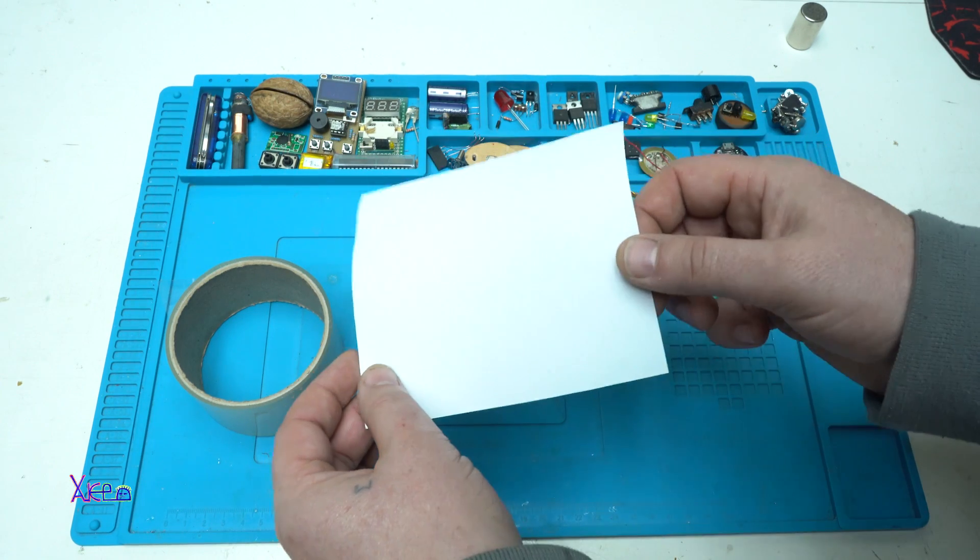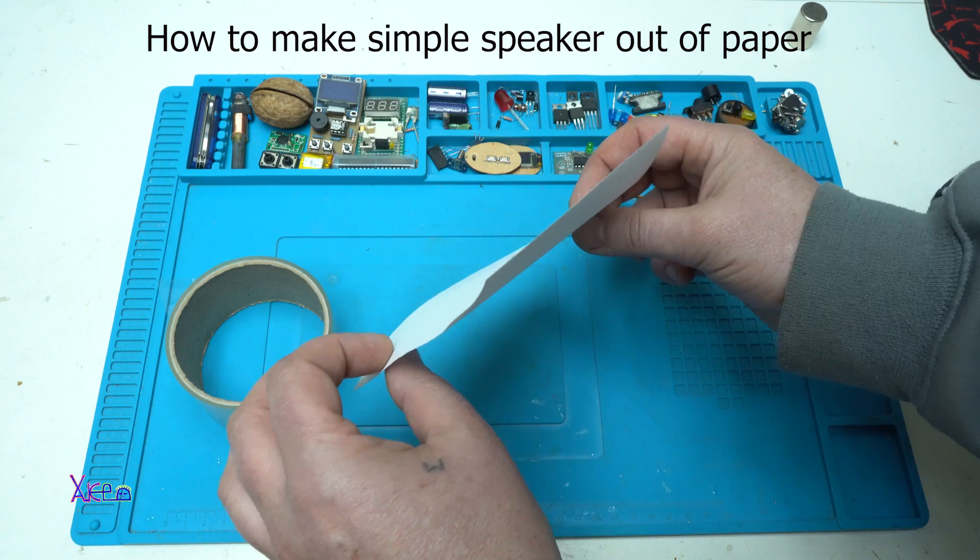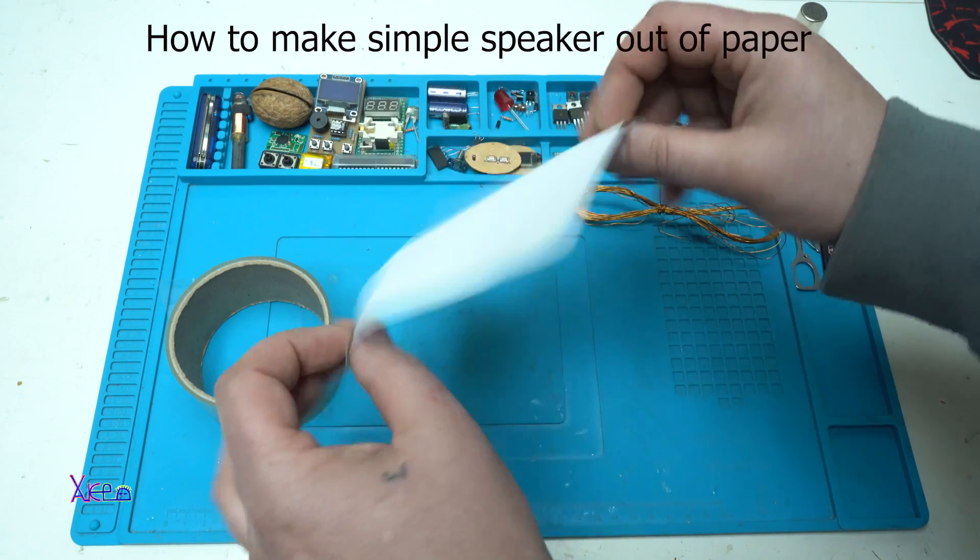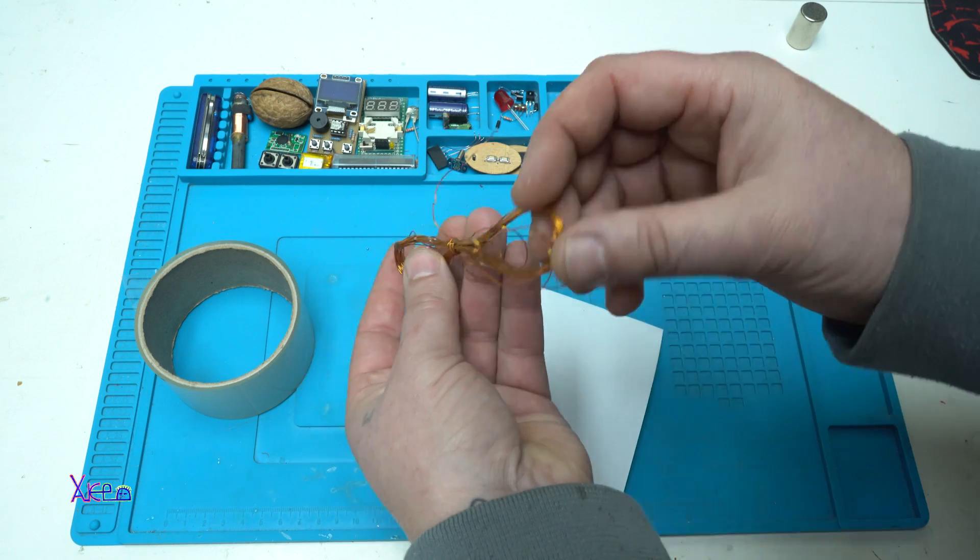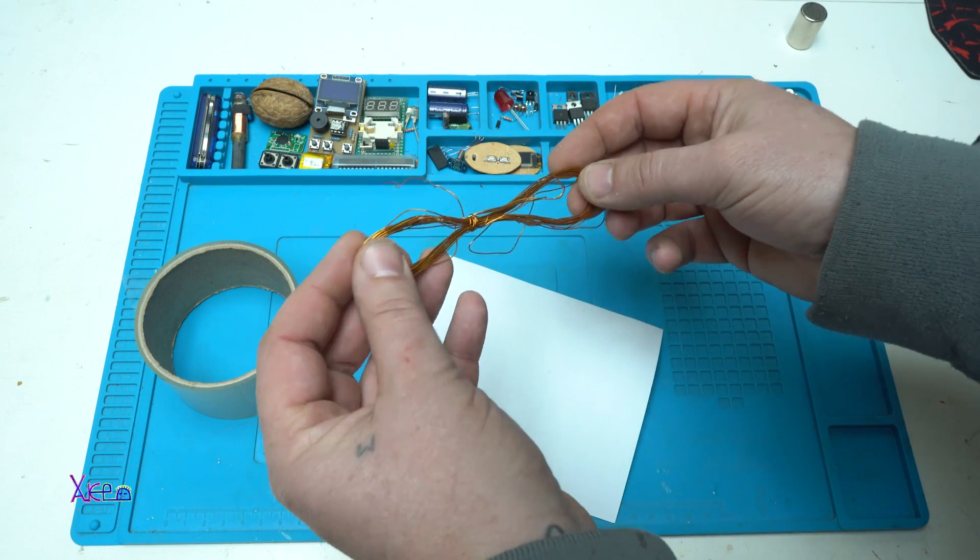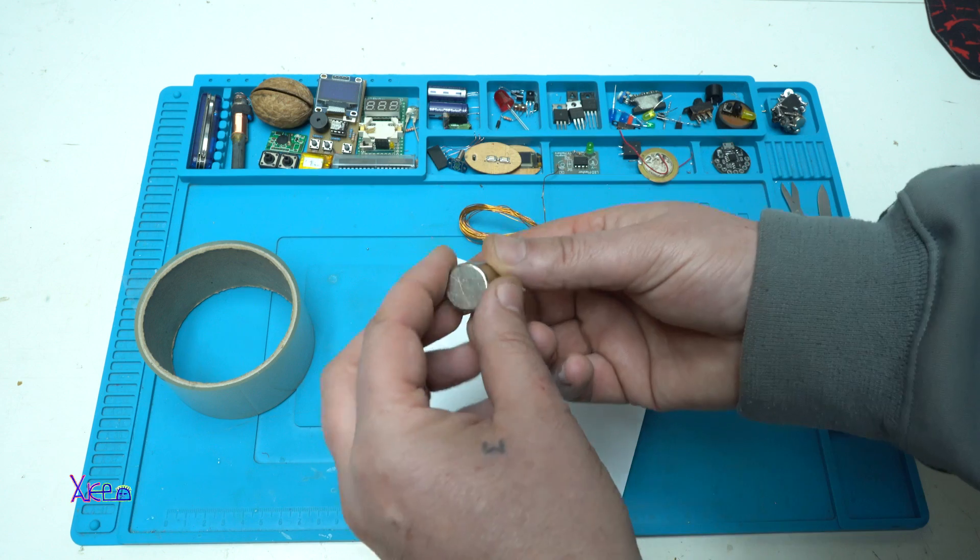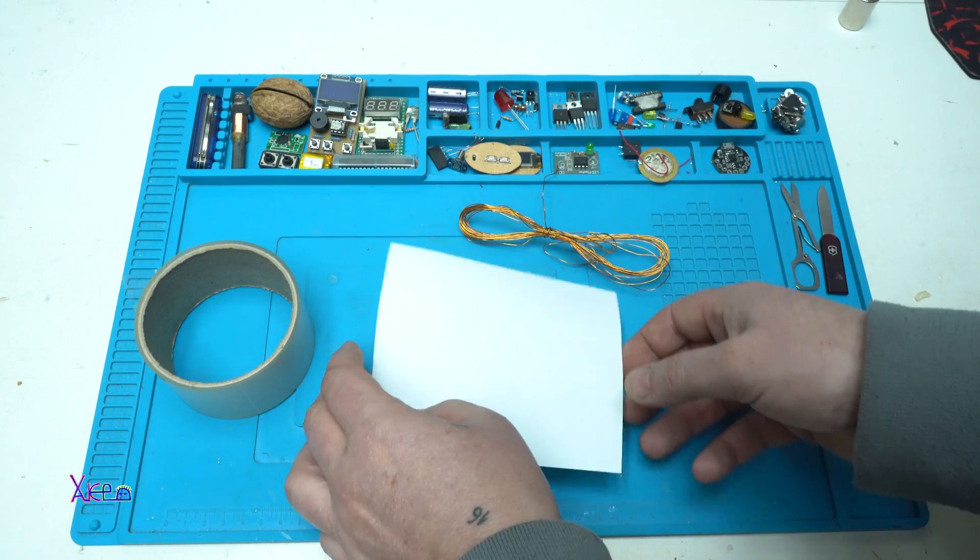In this video I'm going to show you how to make a simple speaker out of this piece of paper, clear tape, copper wire, solid copper wire, and a small magnet. Let's start.